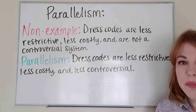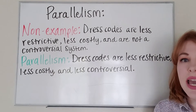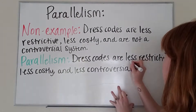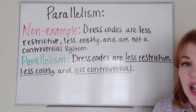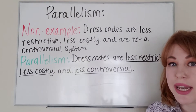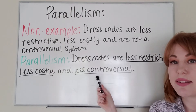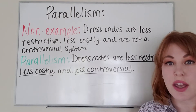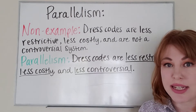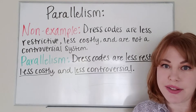Now in our example, 'dress codes are less restrictive, less costly, and less controversial.' Our parallel structure is the use of the same structure for each idea: less restrictive, less costly, and less controversial. Instead of using the words that we had in our previous example, we've condensed our sentence down and made it more parallel and easier to understand.